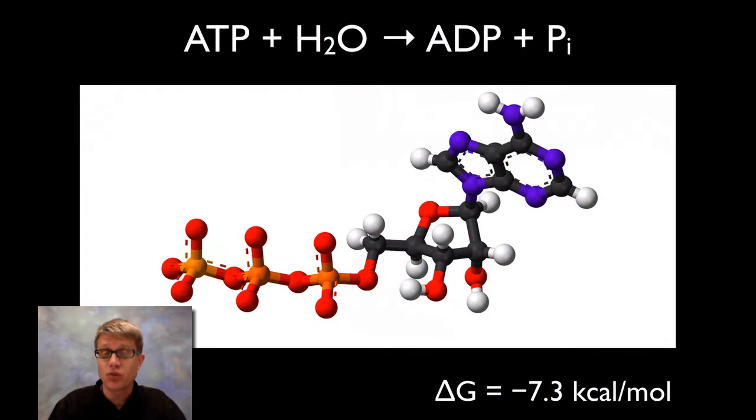In biology we don't use water, we use chemicals. And so the big chemical reaction that you should be familiar with is the breakdown of ATP. This is adenosine triphosphate. It's triphosphate because you have three phosphate groups here on the end. It has a delta G of negative 7.3 kilocalories per mole. That means that it releases energy when this third phosphate is broken off.